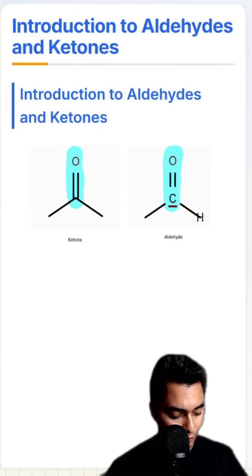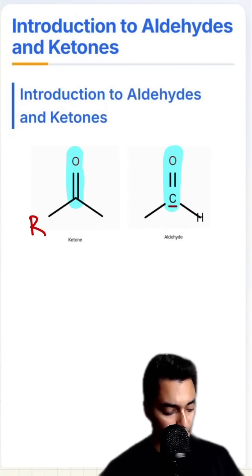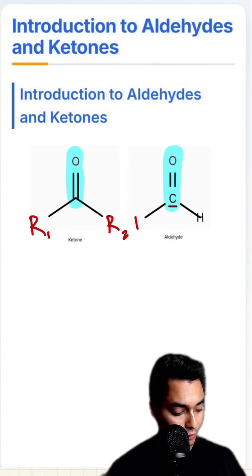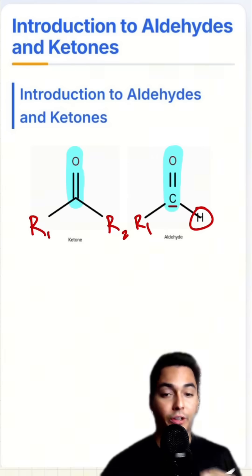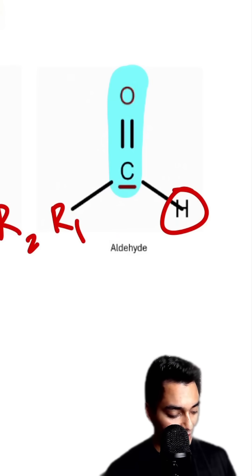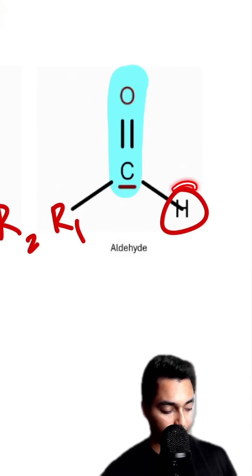But the ketone has two R groups, two other carbon atoms, while the aldehyde only has one R group and one hydrogen. I like to memorize this by saying that aldehyde has an H, and so it has an H.